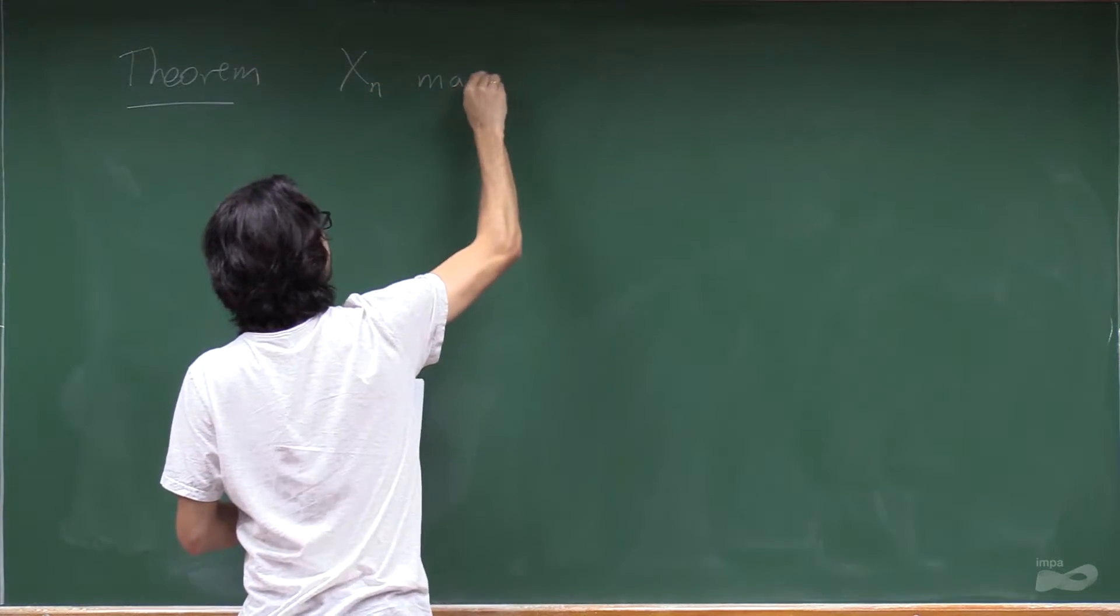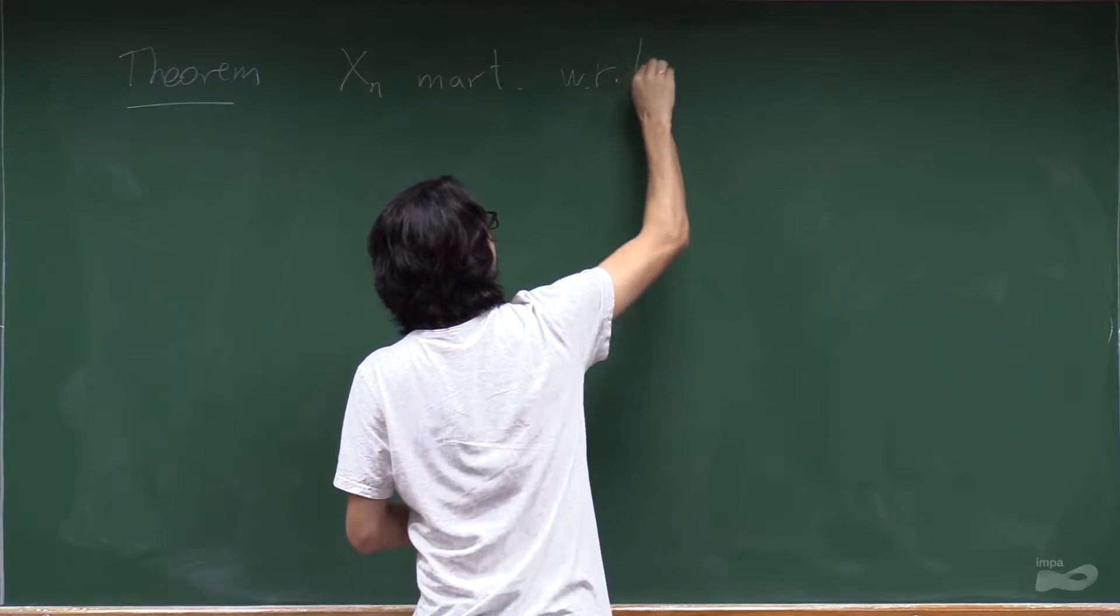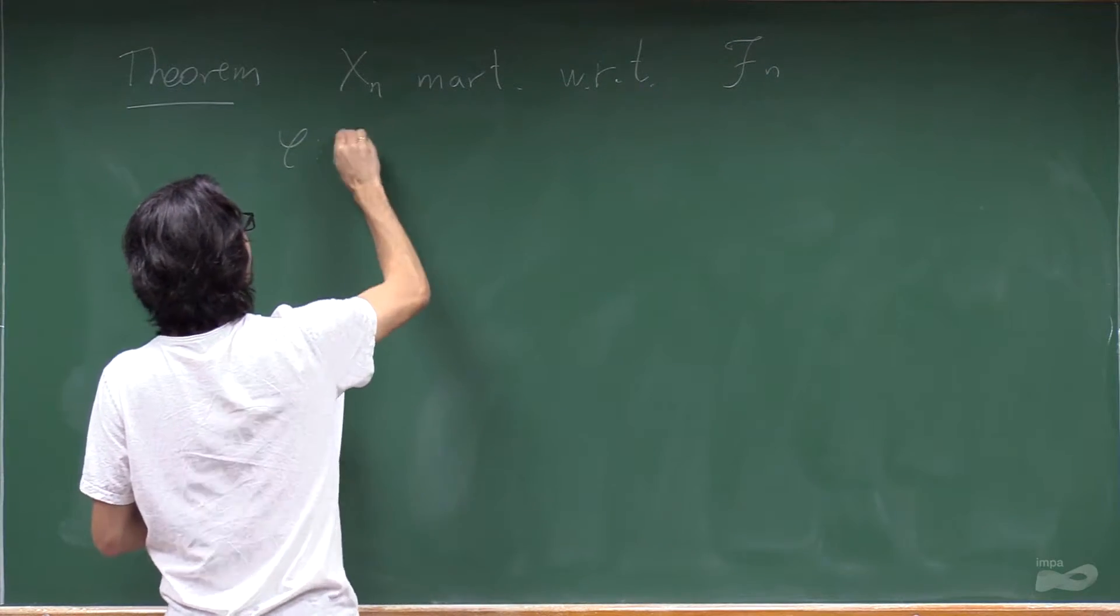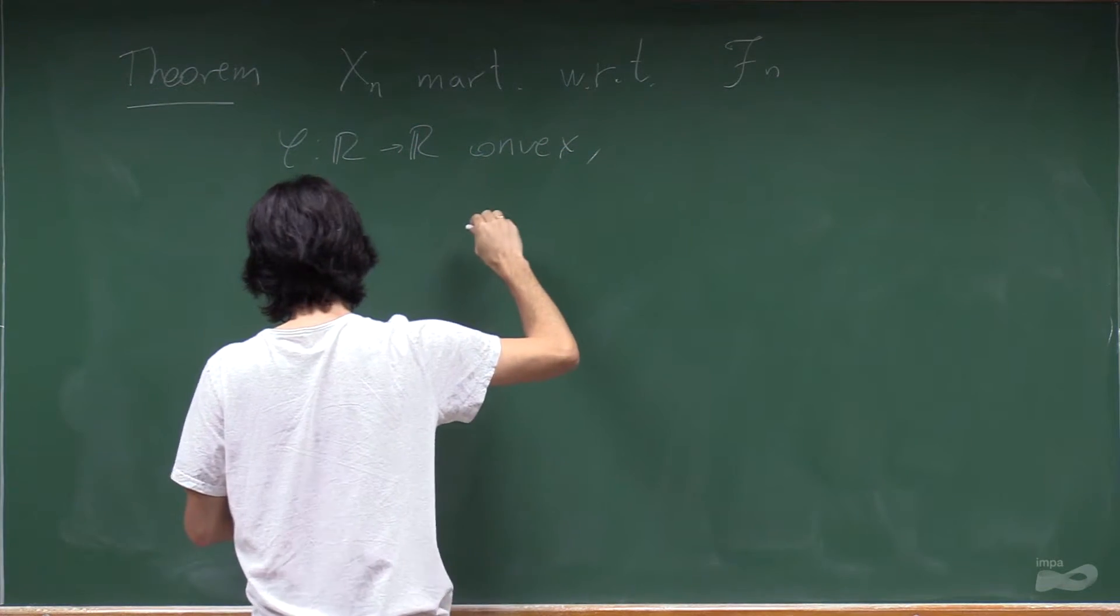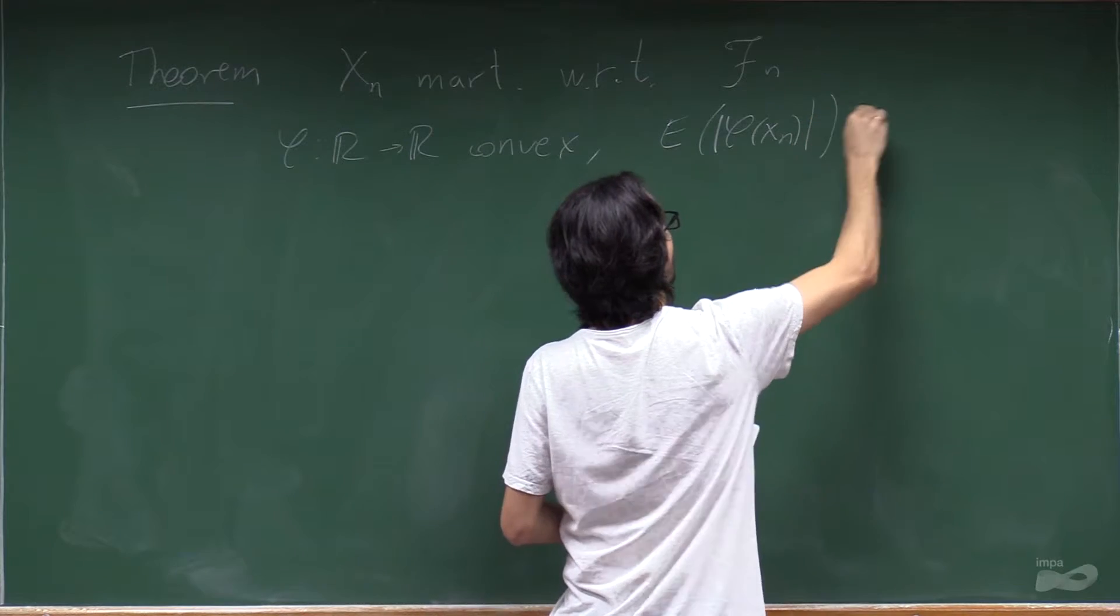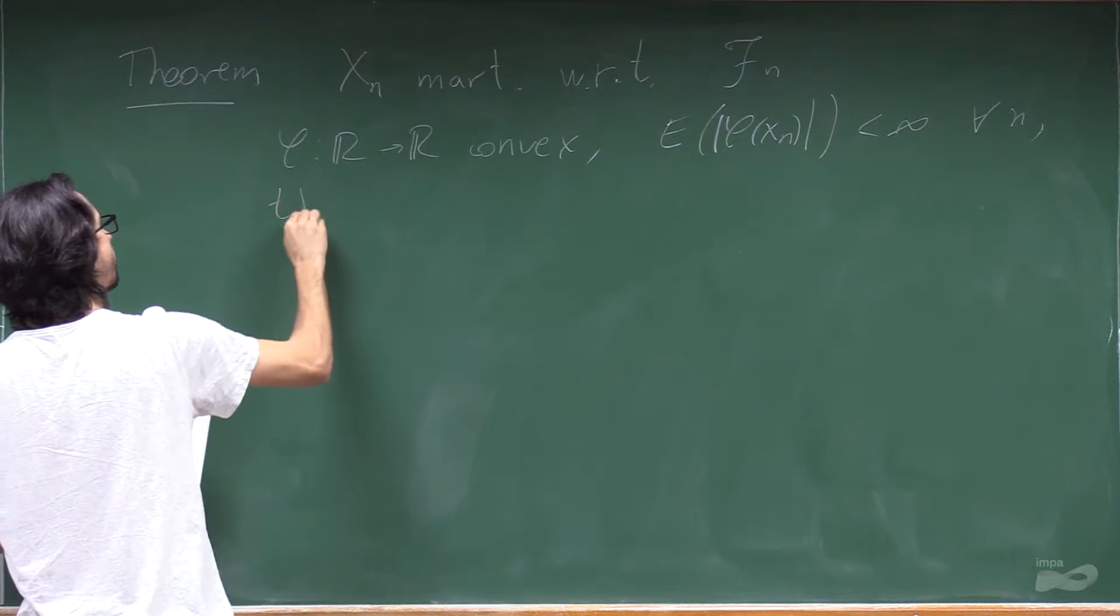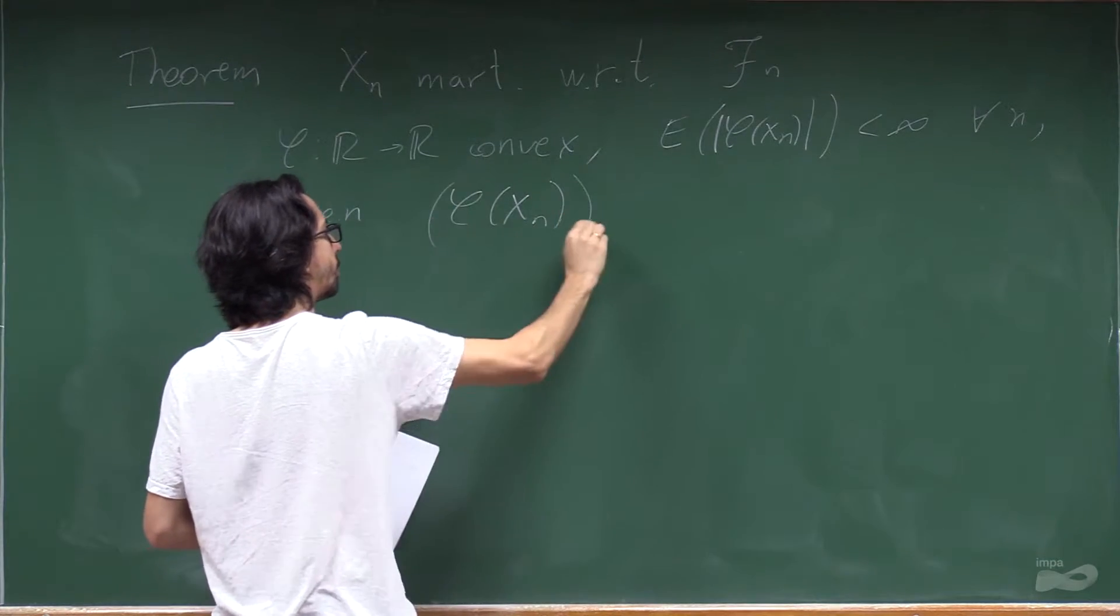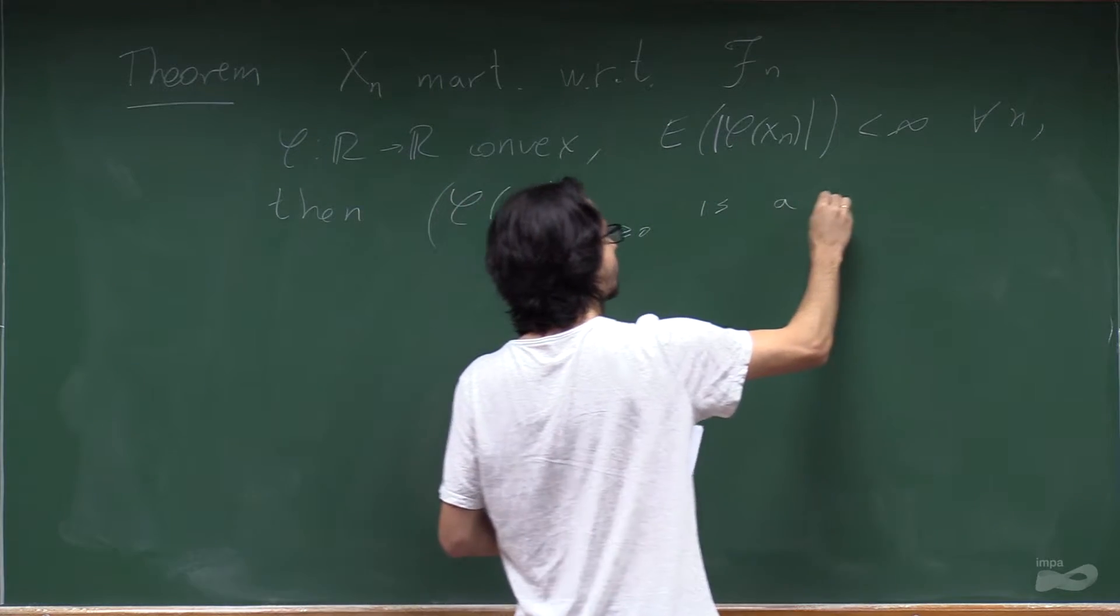So if xn is a martingale with respect to fn and phi is convex, and this is all in L1, then phi of xn. This family of random variables is a sub-martingale.